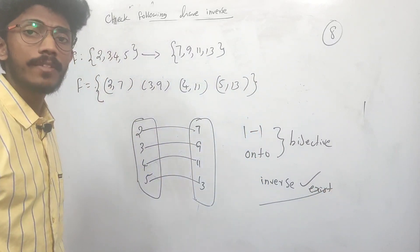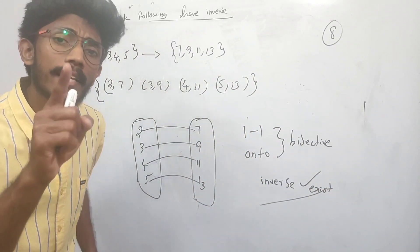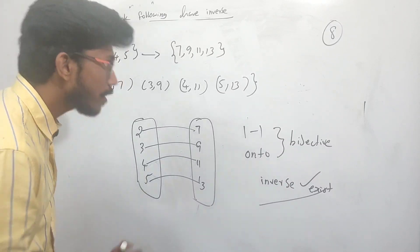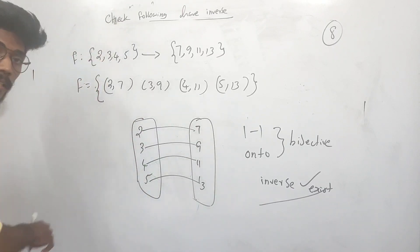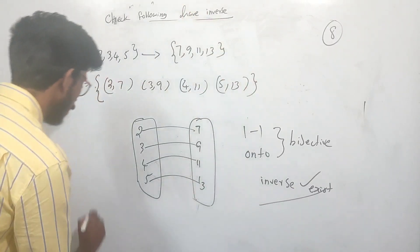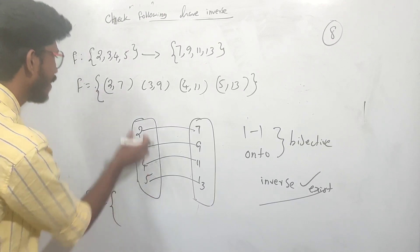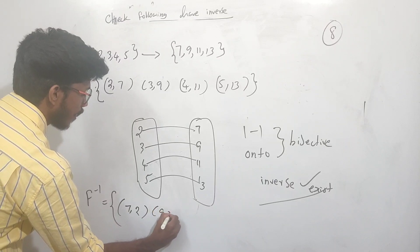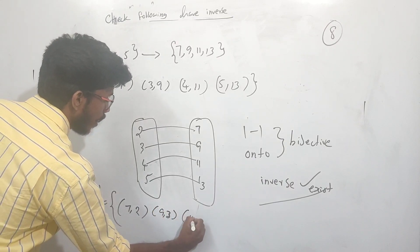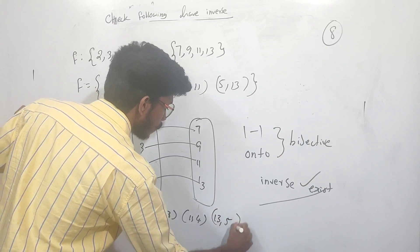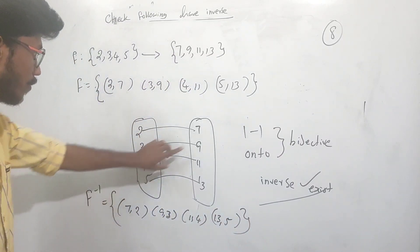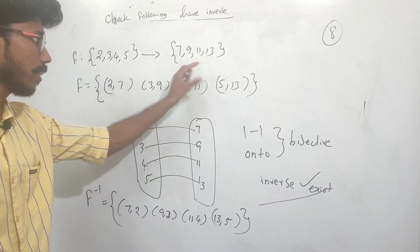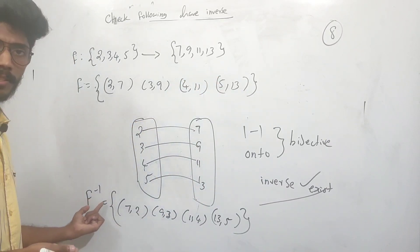So this function is invertible and the inverse exists. The inverse exists for this mapping: 7→2, 9→3, 11→4, 13→5.